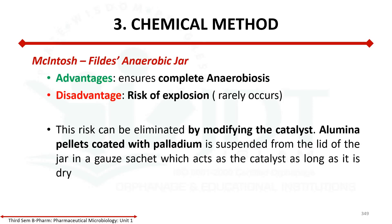The McIntosh-Fildes jar is the most commonly used and most reliable method. Advantages: it ensures complete anaerobiosis. Disadvantage: there is a risk of explosion from palladinized asbestos overheating. This disadvantage can be eliminated by modifying the catalyst — replacing palladinized asbestos with alumina pellets coated with palladium.